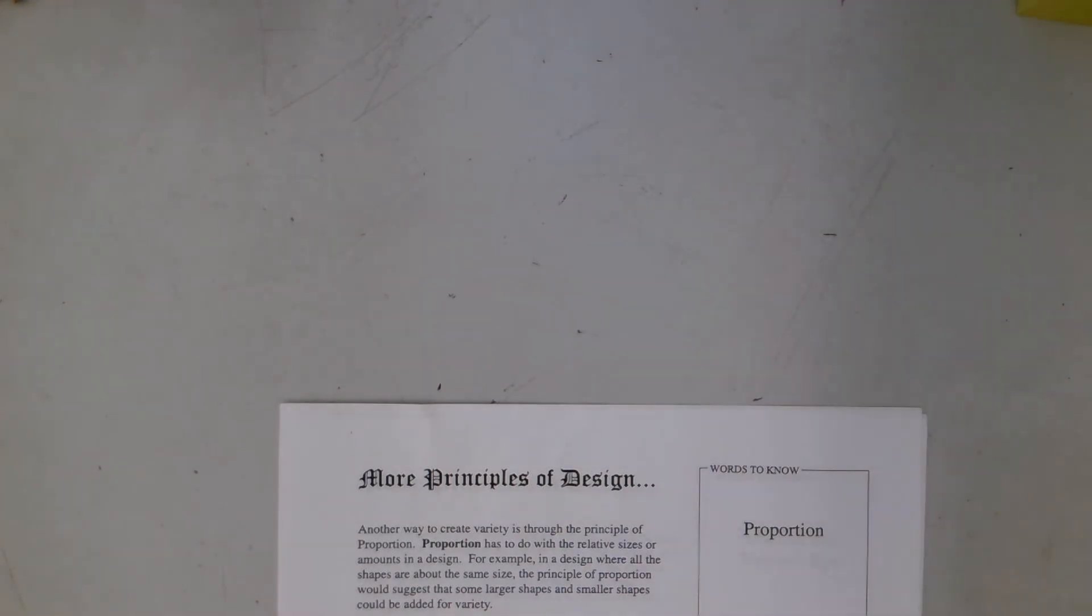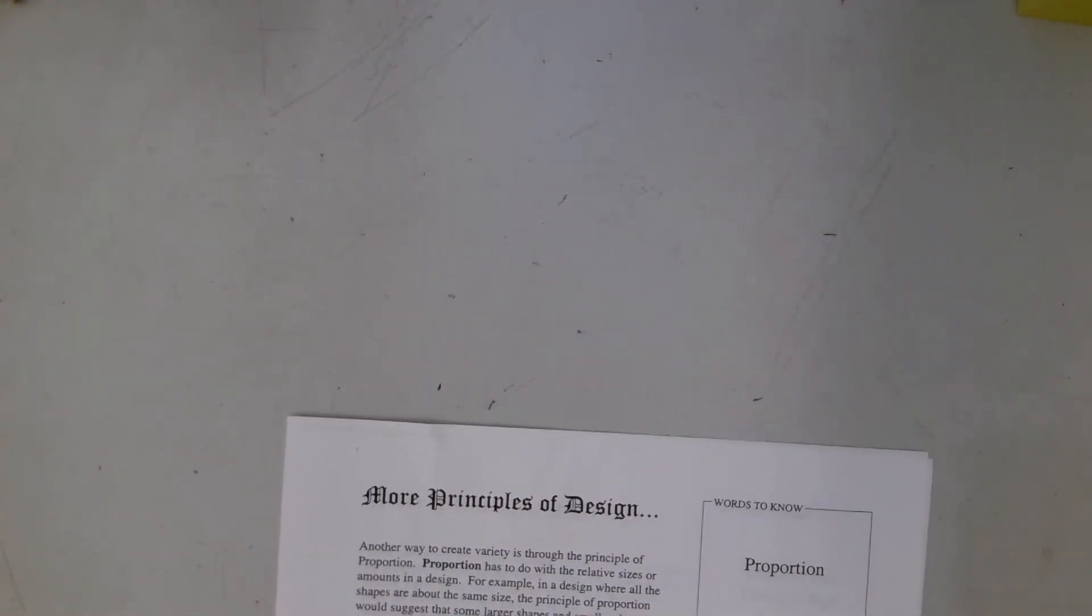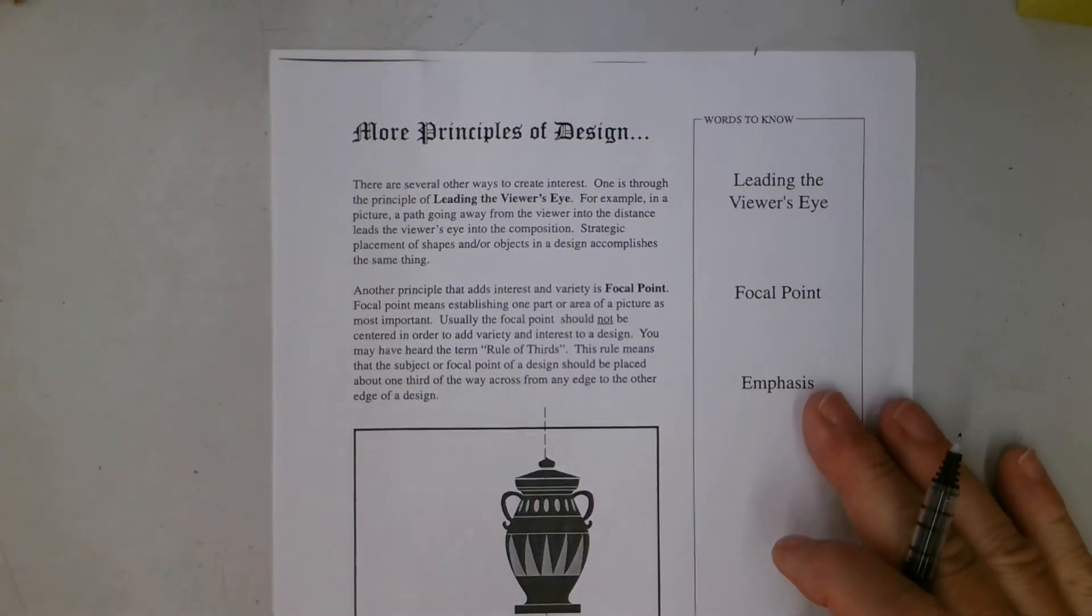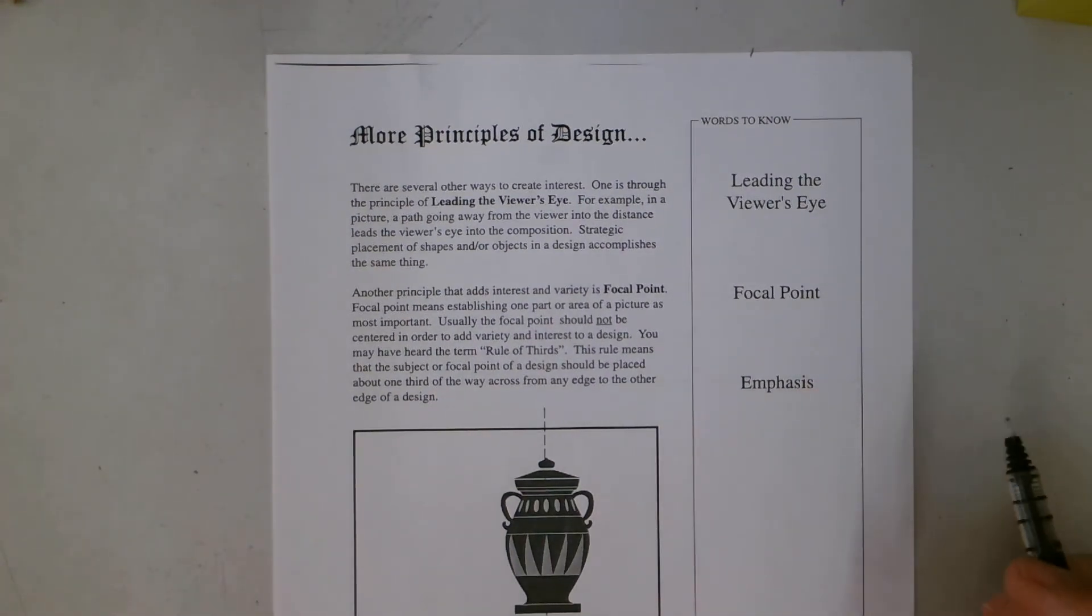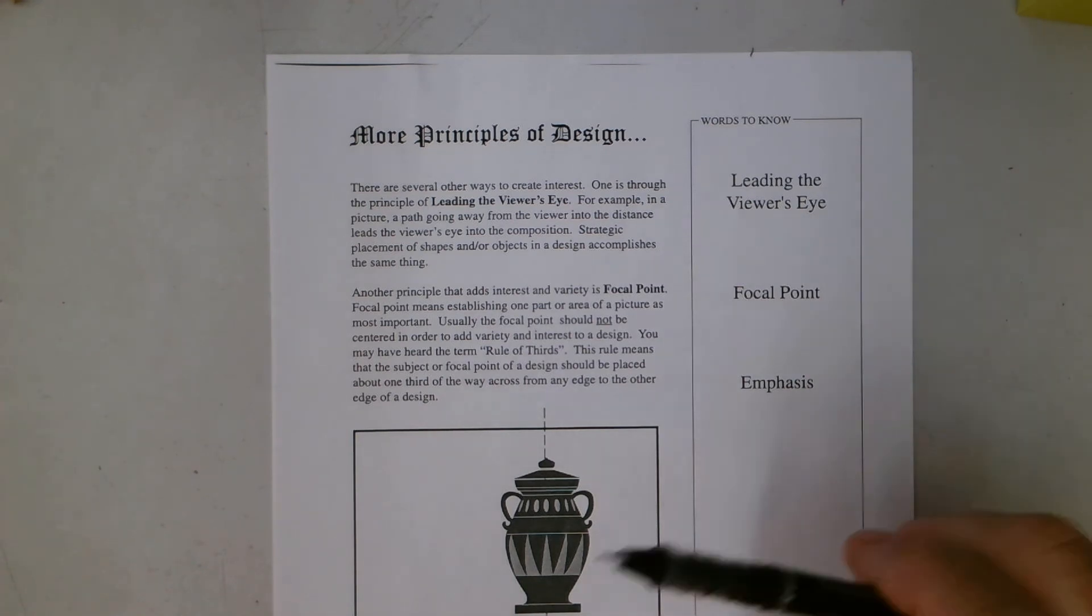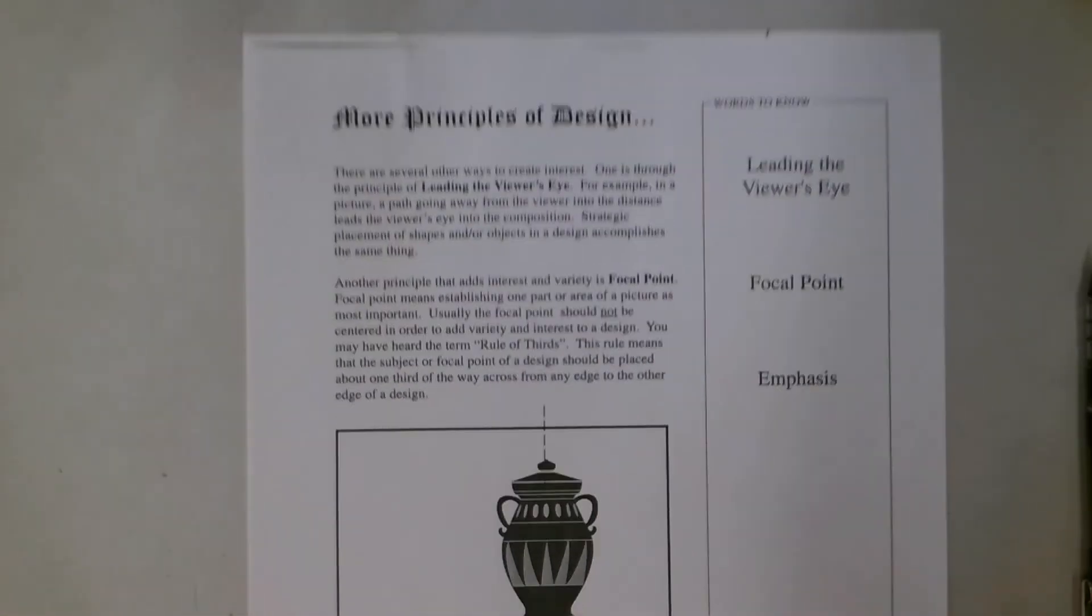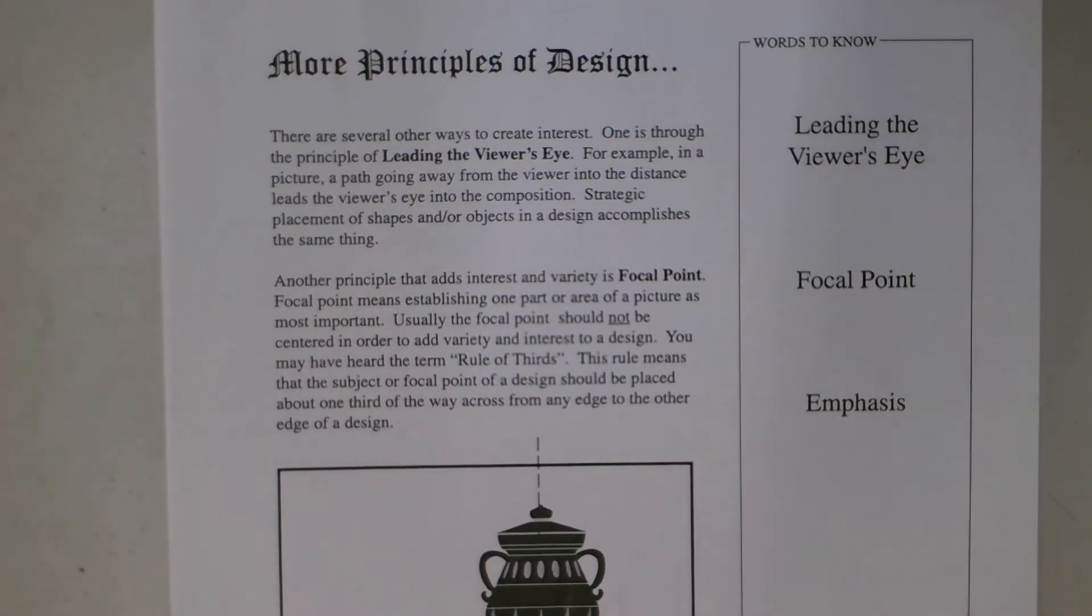That's today's activity, or the first part of that activity. All right, so the next page in this is also about design principles using leading the viewer's eye. We're going to talk about focal point and emphasis. Let me zoom in on this to make it a little easier for you to read. There are several other ways to create interest. One is through the principle of leading the viewer's eye. For example, in a picture, a path going from the viewer's eye into the distance leads the viewer's eye into the composition. Strategic placement of shapes or objects in the design accomplishes the same thing.